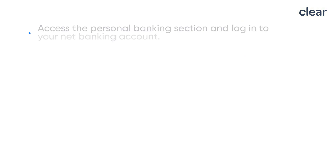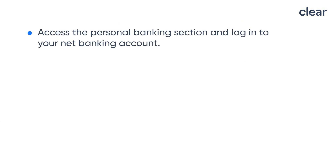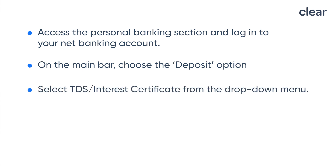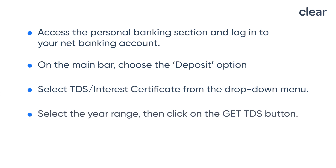Let us now see how to download the Canara Bank interest certificate. Access the personal banking section and login to your net banking account. On the main bar, choose the deposit option. Select TDS or interest certificate from the drop-down menu. Select the year range, then click on the get TDS button. Choose your quarterly option certificate.